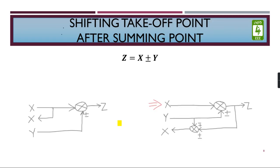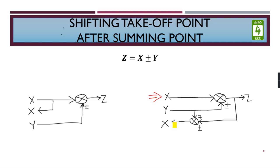If we have to shift this takeoff point after the summing point, again we have to introduce a new summing point. If Y is entering in one summing point here, then Y will enter both the summing points. Rest is similar: we have X as it is, that as it is, a new X, a separate X as it is.